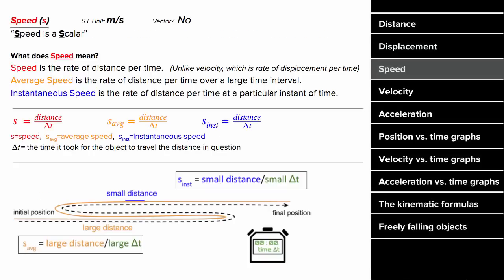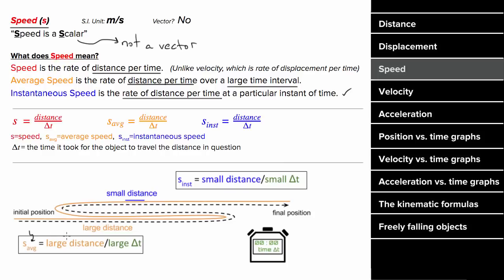What does speed mean? Speed is a way to measure how fast something's moving, and it's a scalar — really just another way of saying not a vector. Speed is defined to be the distance per time. You could define the average speed as the distance per time over a large time interval, or the instantaneous speed as the rate of distance per time at a particular moment. You find average speed by taking the total distance for the entire trip and dividing by the time it took.